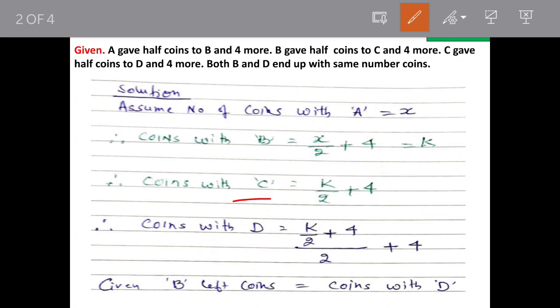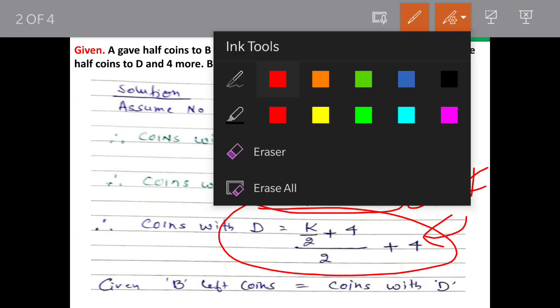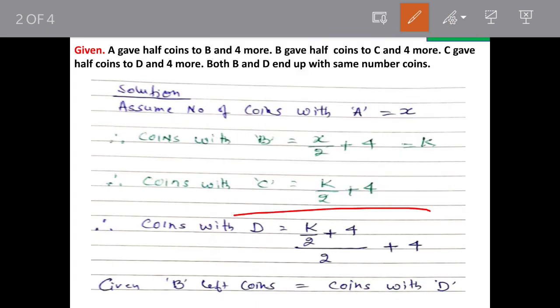So coins with C will be how many? If these are the coins with B, then K by 2. That means if number of coins with B are K, then coins with C will be K by 2 plus 4. And coins with D will be whatever C is having divided by 2 plus 4. So we get this particular equation for coins with D.